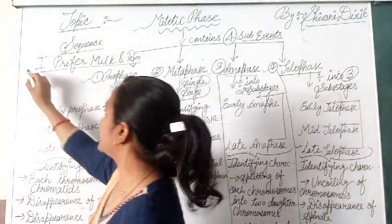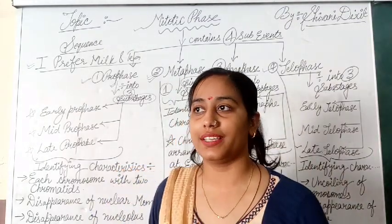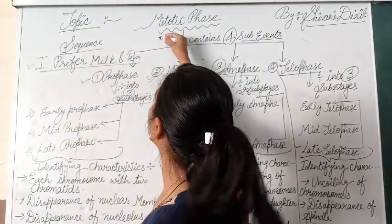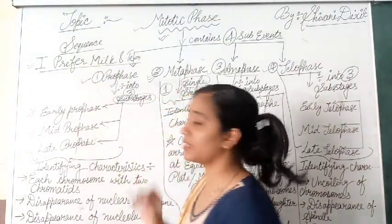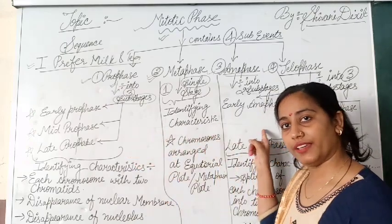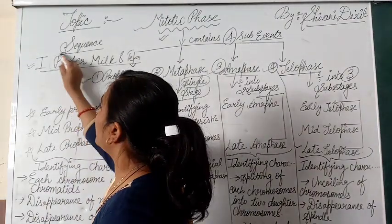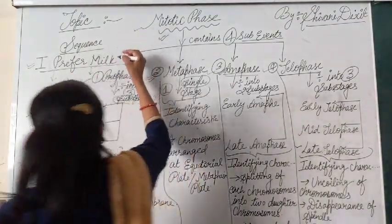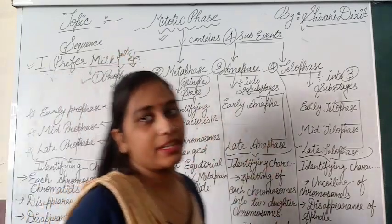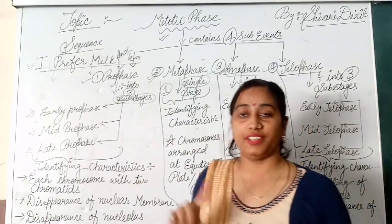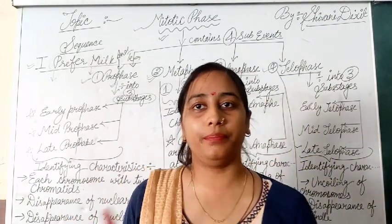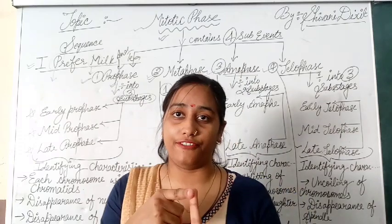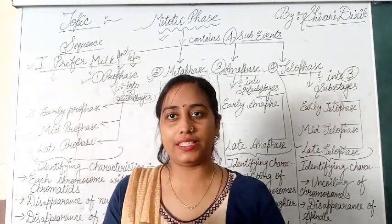Here, 'I' stands for interphase. Interphase, which we studied in our previous video, is a non-dividing phase — in this phase, the cell prepares but does not divide. Now we are on the dividing phase, that is, the mitotic phase, which has 4 stages: prophase, metaphase, anaphase, and telophase. So how will we learn them? 'P' for prophase, 'M' for metaphase, 'A' for anaphase, and 'T' for telophase — I prefer milk and tea.